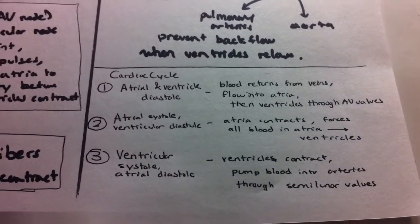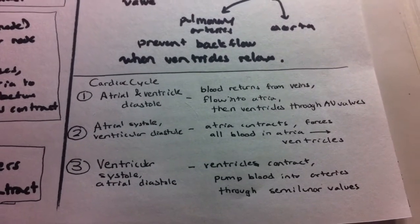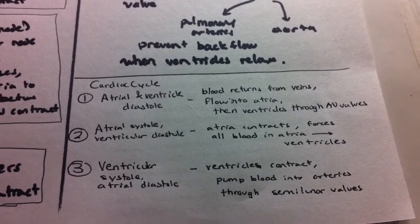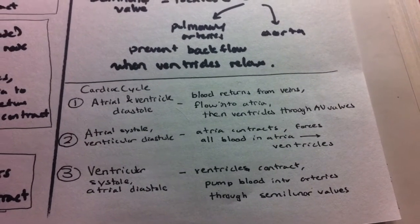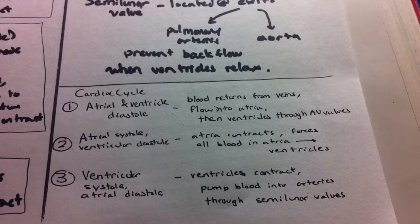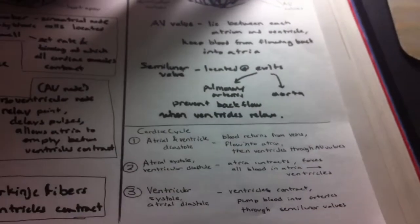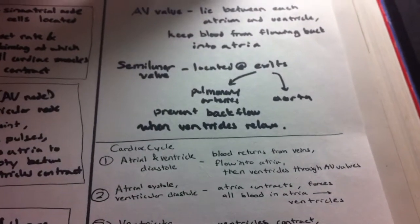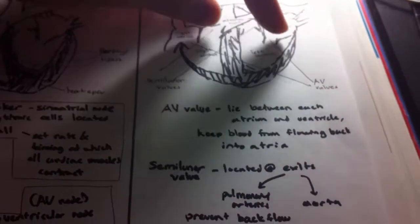We're going to have the cardiac cycle in three phases. First of all, we have atrial and ventricular diastole, so we have relaxations in the atrium and the ventricles. Blood returns from the veins here and enters the atrium. And at the same time, they flow into the ventricles through the AV valves.